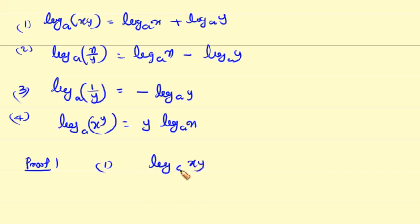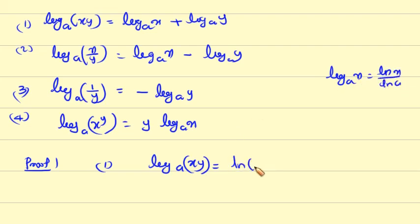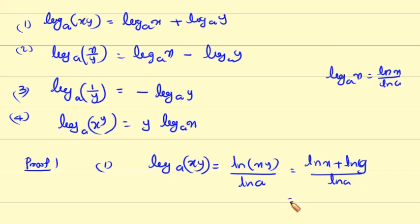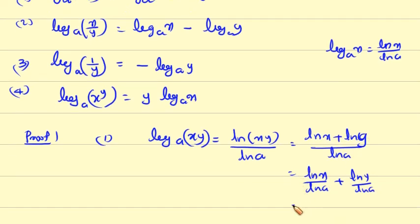Proof of property 1: log(xy) to the base a equals ln(xy) divided by ln a. Since ln(xy) equals ln x plus ln y, this becomes ln x over ln a plus ln y over ln a, which equals log x to the base a plus log y to the base a. Therefore log(xy) to the base a equals log x to the base a plus log y to the base a.